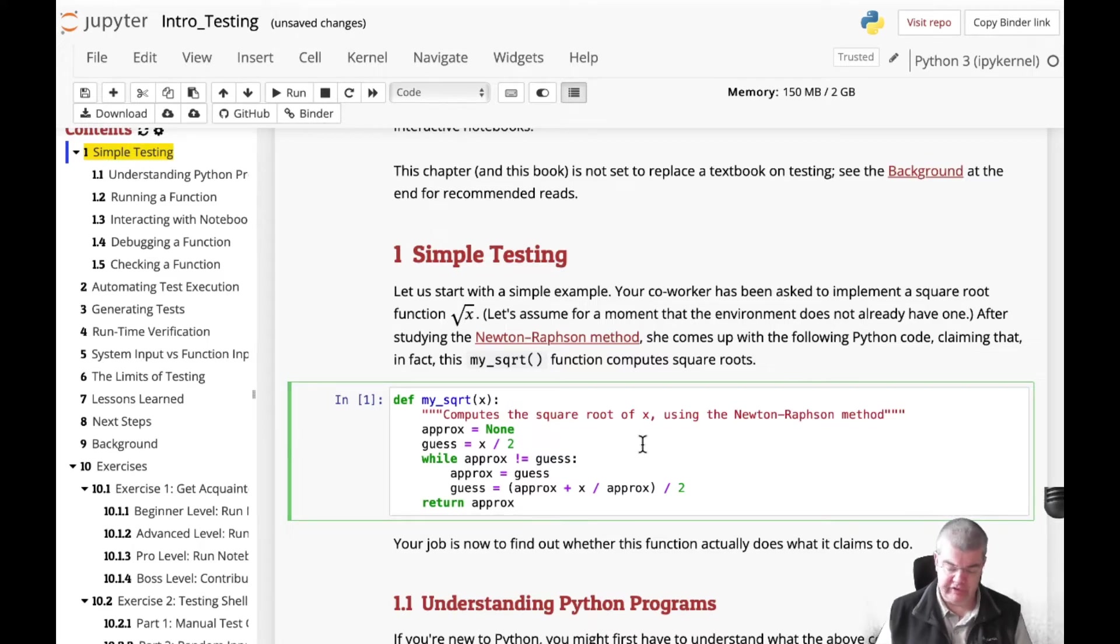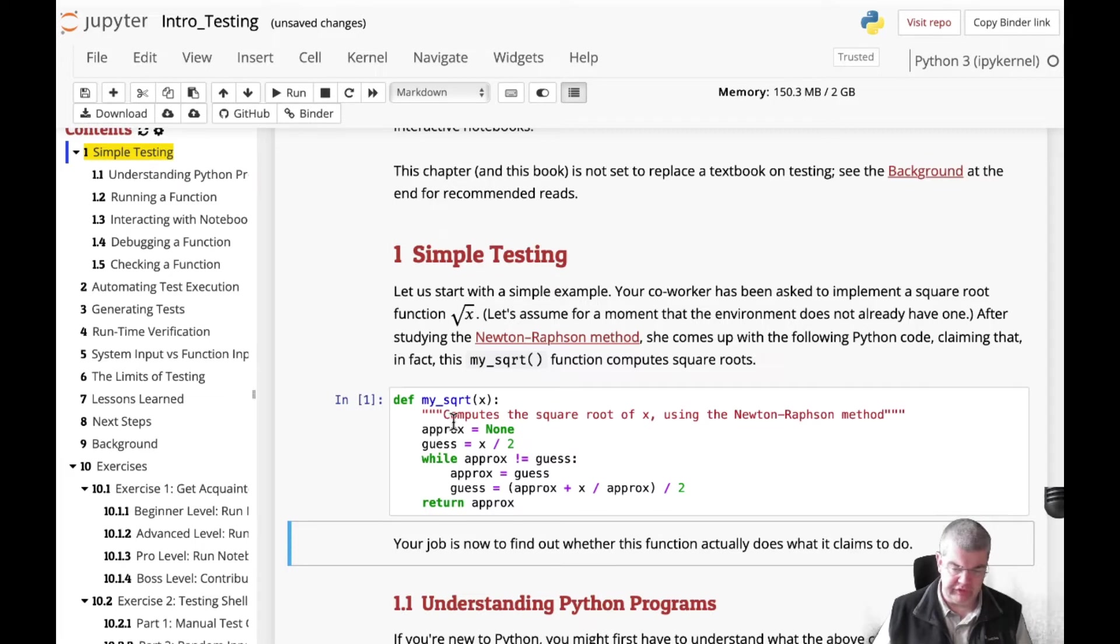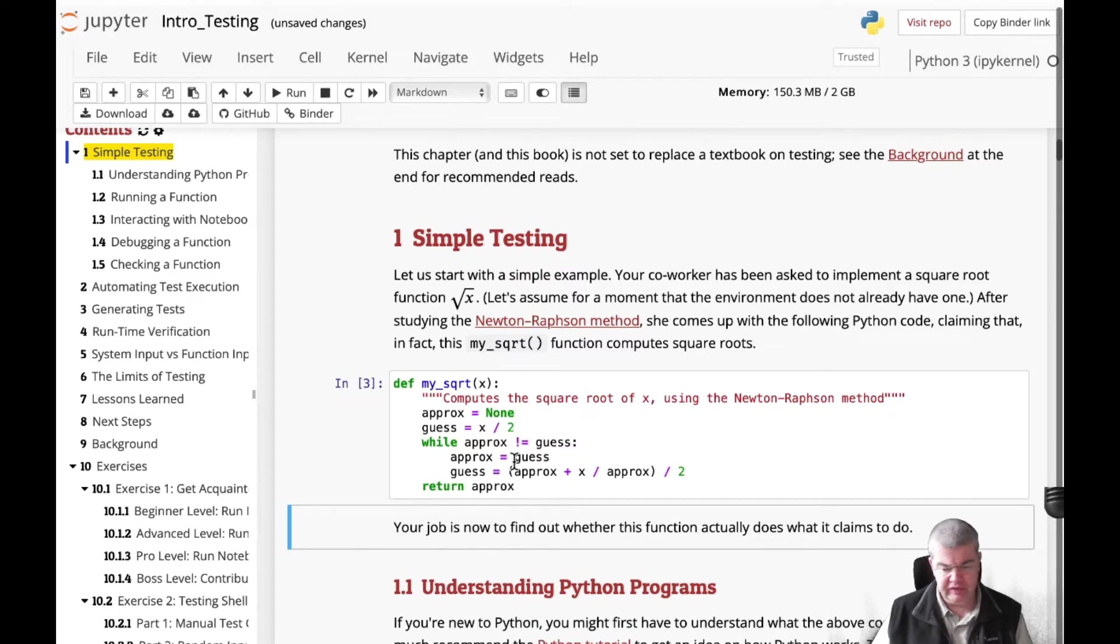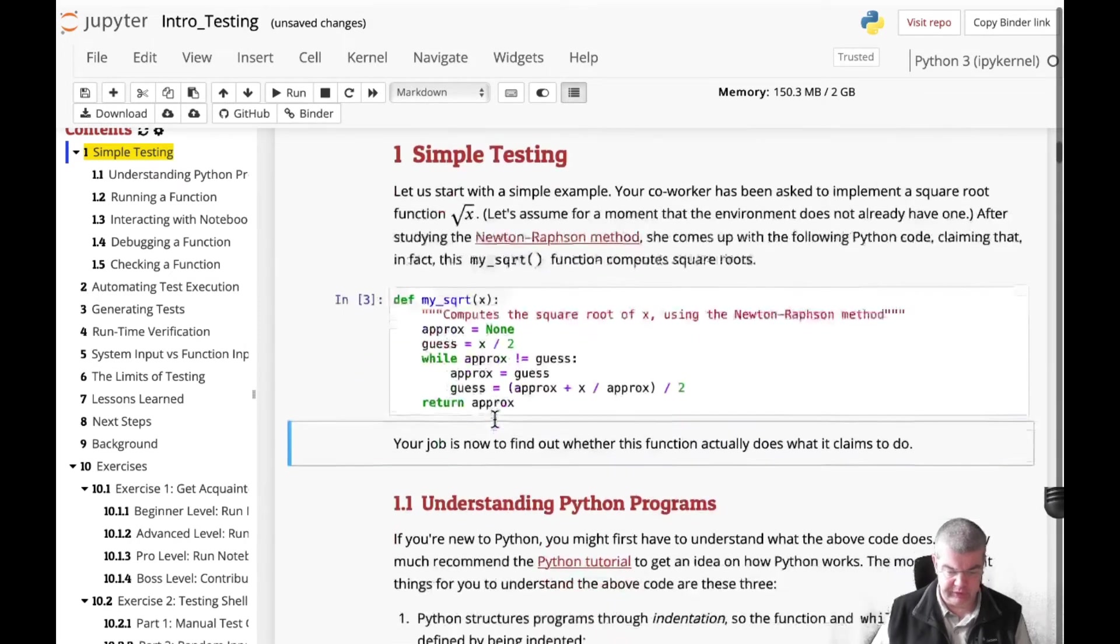Blue is text. Green is code. And by pressing shift and return at the same time you can now go and execute this. Which you can see here while it's executing it actually changes the number over here. So there's a star while it's computing and every time you execute something this number gets increased. So now we have sent this definition to a Python interpreter in the back.